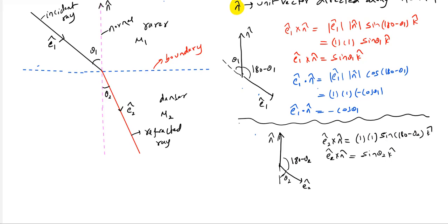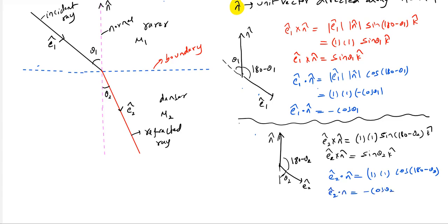K̂ is the unit vector directed perpendicular to the plane containing n̂ and Ê₂. The dot product: Ê₂ · n̂ = cos(180 − θ₂) = −cos θ₂. These relations are what I'll use in the equations. Let's proceed.